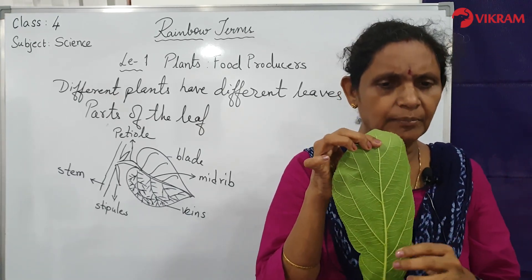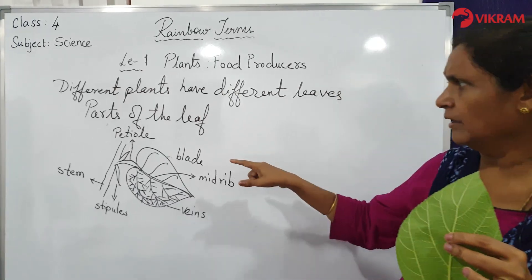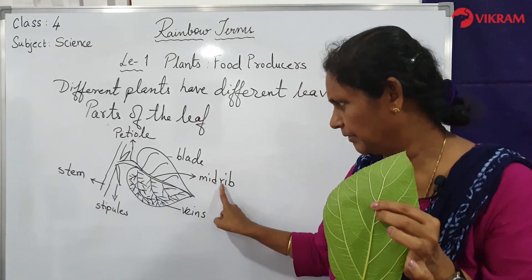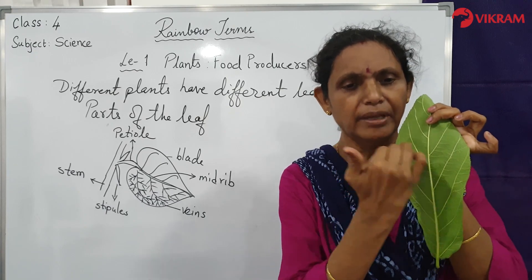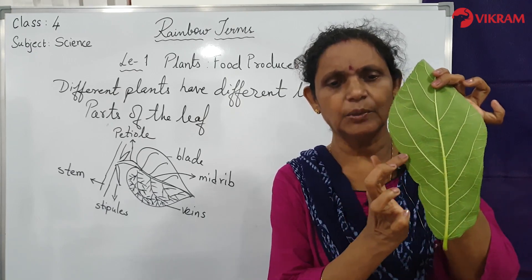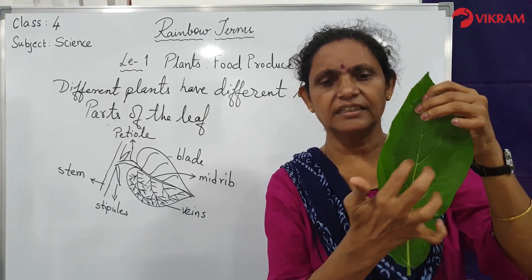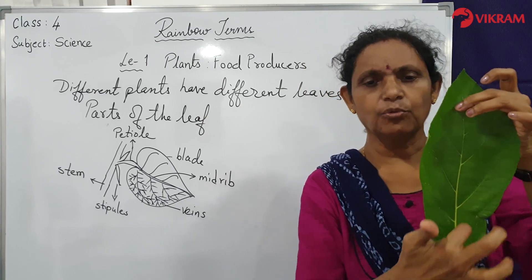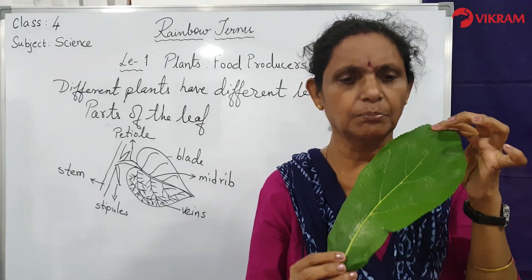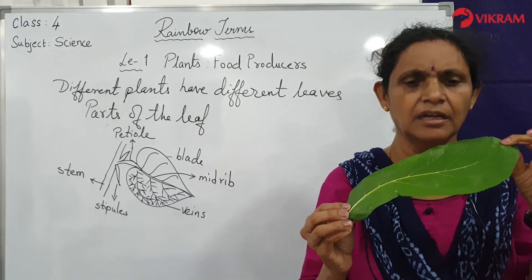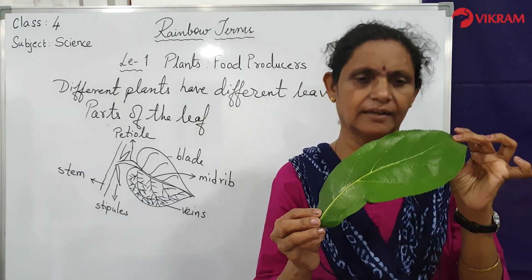So what do the veins help with? The leaf blade has a mid vein or mid rib in the middle. The mid rib has many other side veins on both sides. These veins carry food and water in the leaf. They also support the blade, much like the metal ribs that support the fabric of an umbrella.